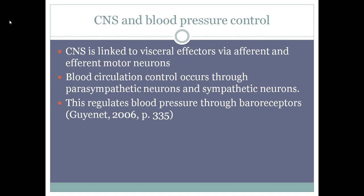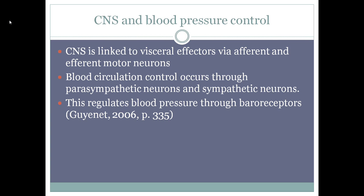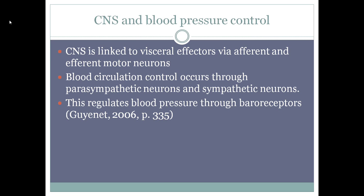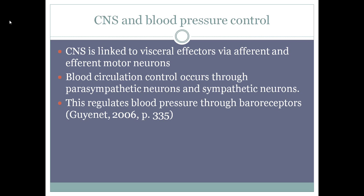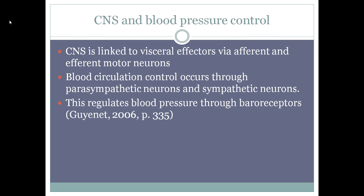CNS and blood pressure control. Afferent and efferent neurons link the CNS to visceral effectors. Sympathetic and parasympathetic pathways consisting of preganglionic neurons within the CNS innervate ganglia and glands, such as the adrenal gland, outside the CNS. These networks contain motor neurons that control muscles. The neural control for blood circulation operates through parasympathetic neurons that innervate the heart and sympathetic neurons that innervate blood vessels, medulla, kidneys, and the heart, regulating blood pressure control through the baroreceptor.